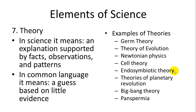Once something has been tested rigorously over time you can call it a theory. In science, theory means an explanation supported by facts, observations, and patterns — something that has taken a long time to reach. In common language however it means a guess, but in science it's a term that means a lot more. Some examples of theories with lots of evidence are Newtonian physics, the theory of evolution, germ theory, cell theory, and endosymbiotic theory. All of these are basically taken as fact for the time being.